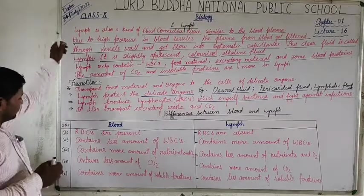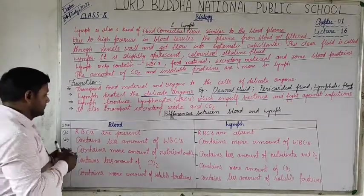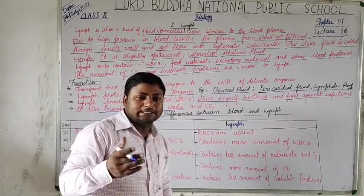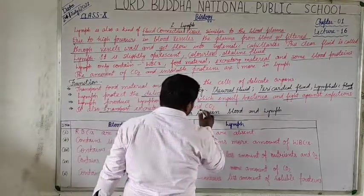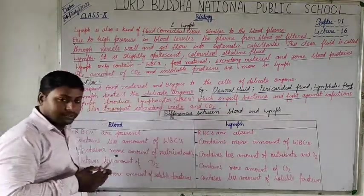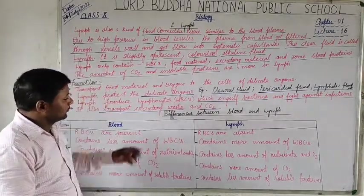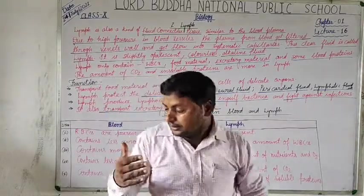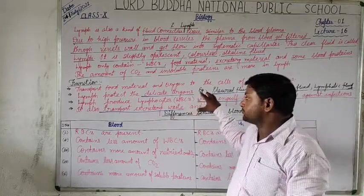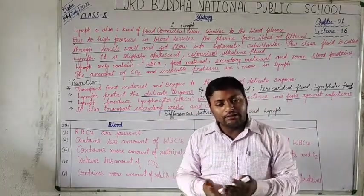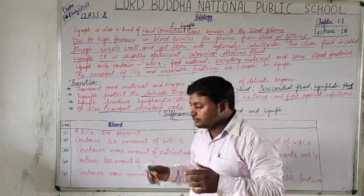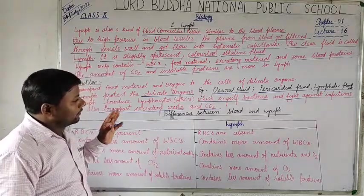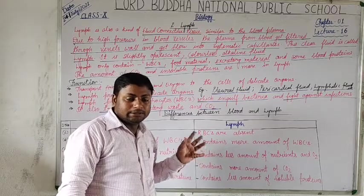Lymph also transports excretory waste — the nitrogenous waste which forms after the oxidation of nutrients, and carbon dioxide which is formed during respiration. These are also transported by the lymph. We have now studied the functions of lymph and found there are lots of similarities between blood plasma and lymph, but also some remarkable differences between blood and lymph.